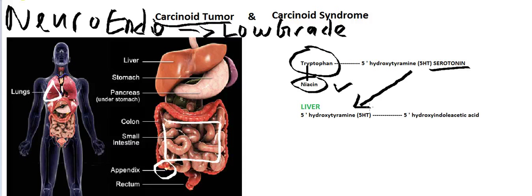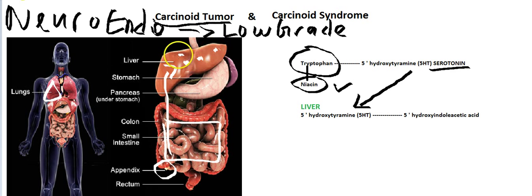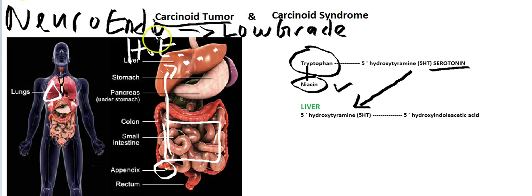So this 5-HT goes to the liver and the liver converts this 5-HT into 5-hydroxyindoleacetic acid. This breakdown helps serotonin not cause trouble in your body. But where the complications begin is that it may metastasize to the liver, and this is where the problems start. The tumor is very sneaky — it drains to the hepatic vein before it can be metabolized or broken down into 5-hydroxyindoleacetic acid. It escapes through the inferior vena cava into the heart, the lungs, and other places, and that's where the systemic problems come in.